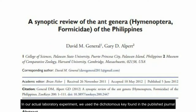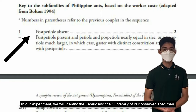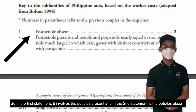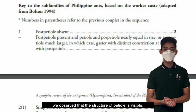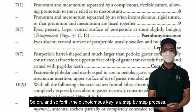In our actual laboratory experiment, we used the dichotomous key found in a published journal entitled 'A Synoptic Review of the Ant Genera, Hymenoptera: Formicidae of the Philippines' by General and Albert, 2012. We will identify the family and subfamily of our observed specimen using the identification key. In the first statement, the petiole is present; in number two, the petiole is absent. Based on our observation, the structure of the petiole is visible, so we go to key number seven. The description involves the mesonotum and pronotum, and so forth — the dichotomous key is a step-by-step process until we obtain the subfamily and family.